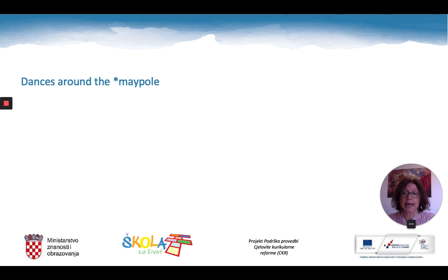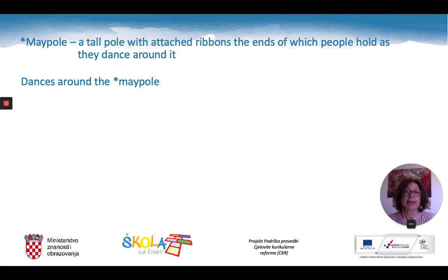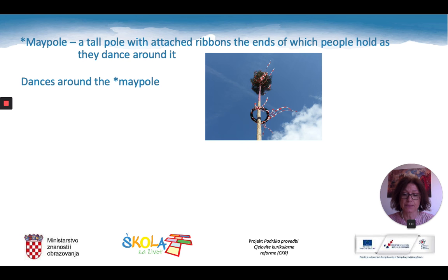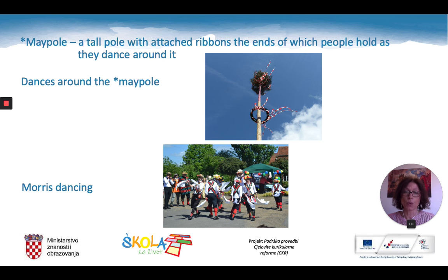On this day, people also set up decorated May trees or Maypoles. A Maypole is a tall pole with attached ribbons, the ends of which people hold as they dance around it. We also need to mention Morris dancing — it is a ritual folk dance. The dancers often wear white clothes and dance with bells fastened to their legs.